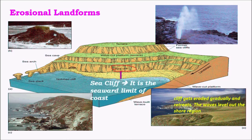Sea cliffs are at the seaward limit of the coast, formed due to successive erosional processes where a higher-standing landform is successively eroded from bottom to top, giving rise to a structure that stands higher compared to sea level. These cliffs get eroded gradually as waves level out the shore region, and sea cliff structures remain for a longer period of time.